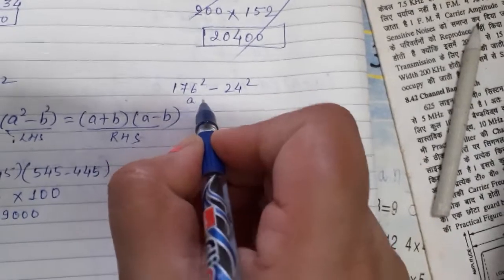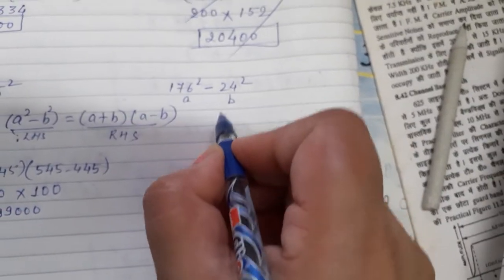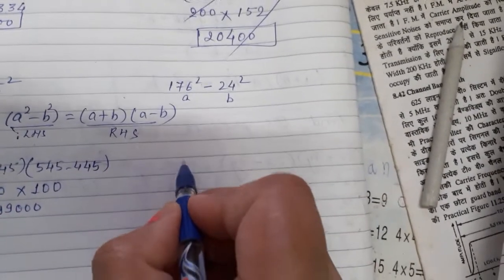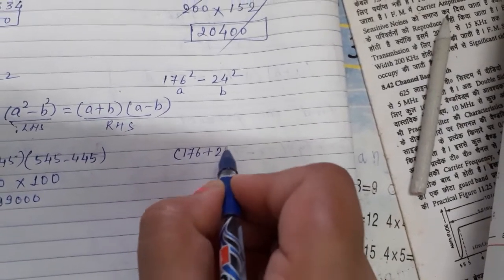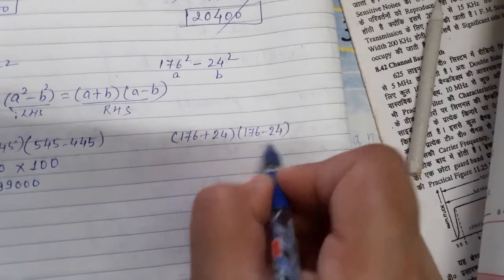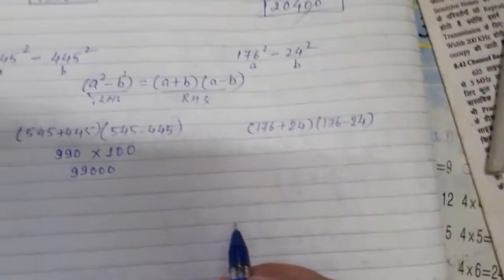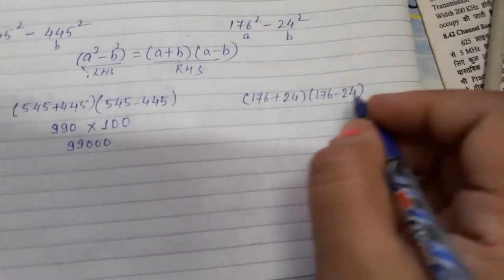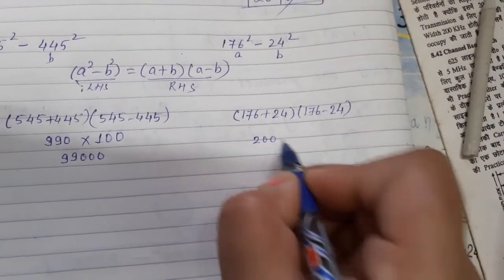The value of a will be 176 and the value of b will be 24. So expand it: (176 + 24) times (176 - 24). The value of 176 plus 24 is 200.